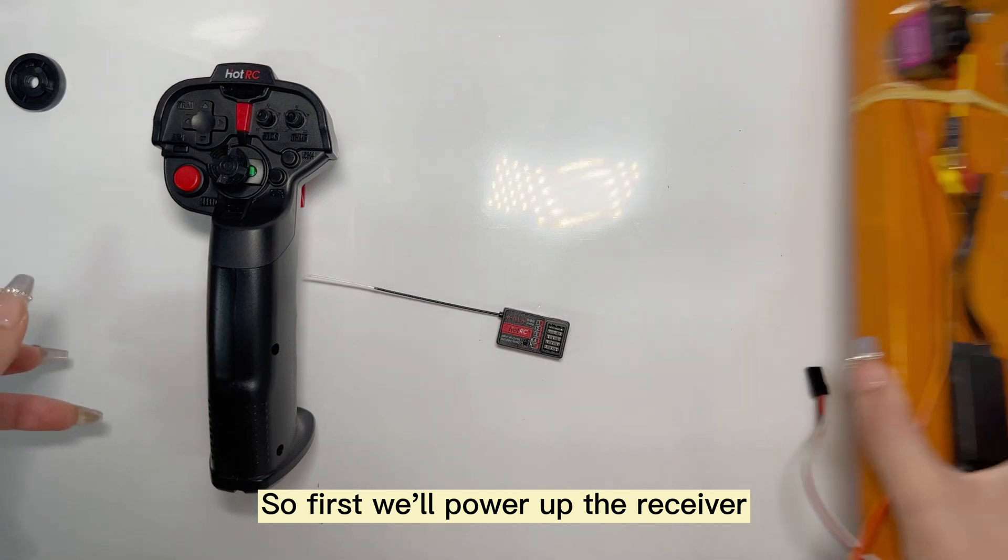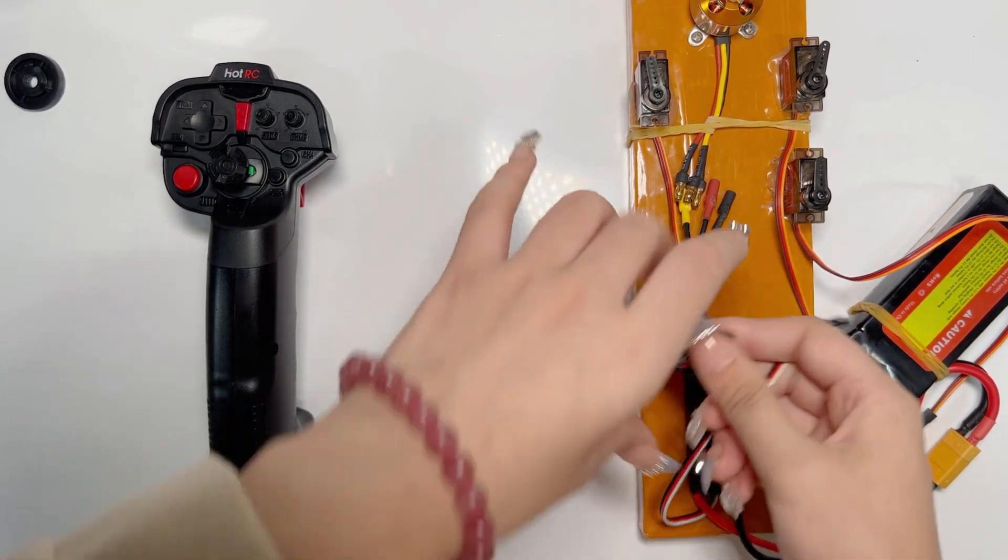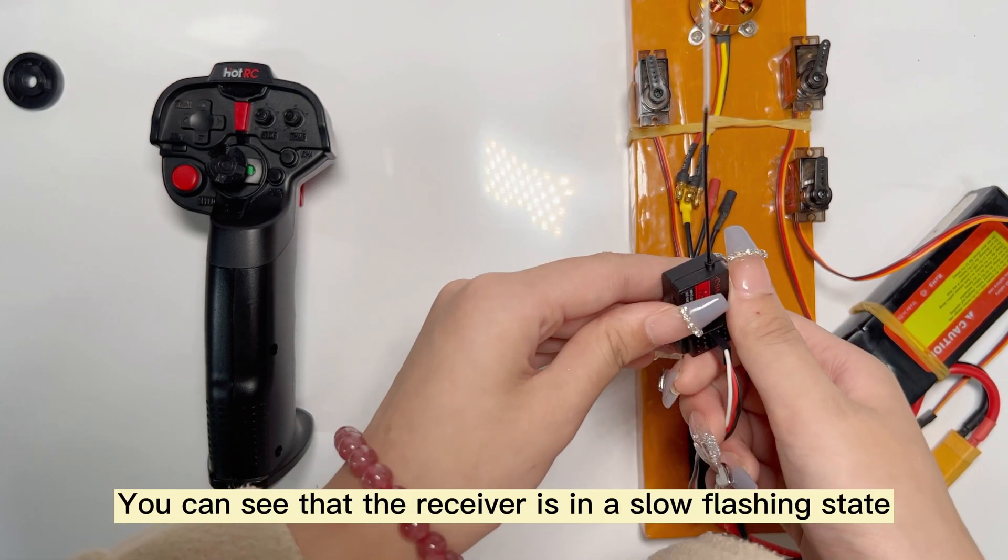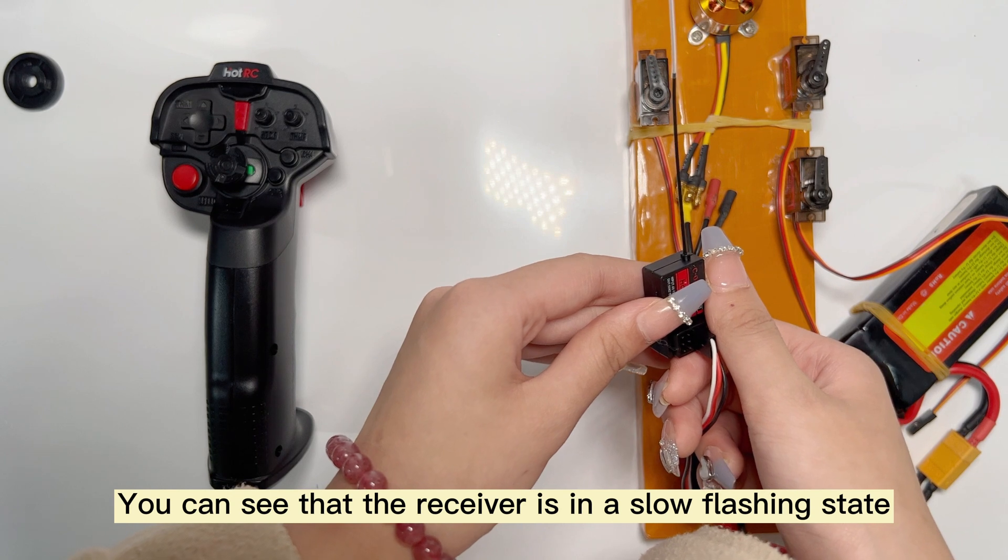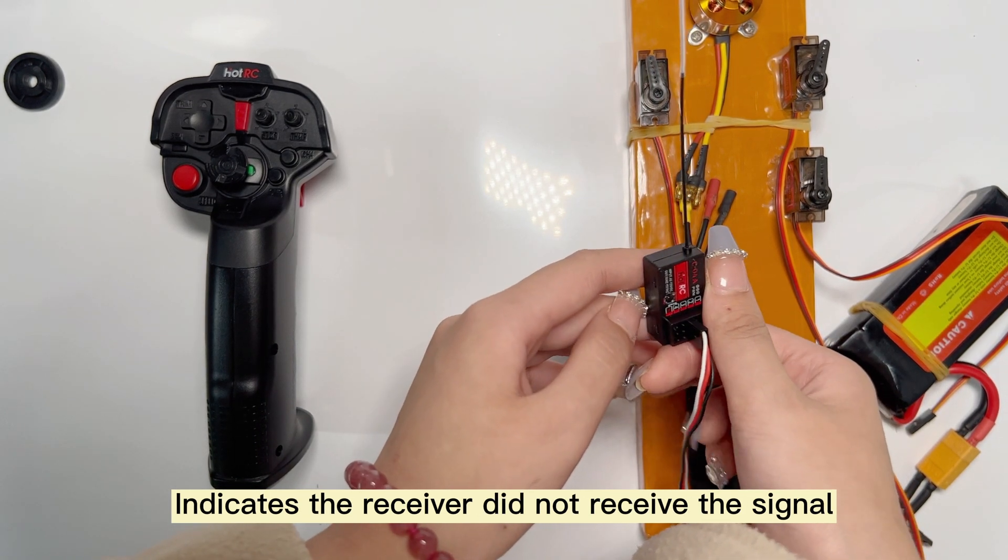So first, we'll power up the receiver. Connect power to the receiver. You can see that the receiver is in a slow flashing state, indicating the receiver did not receive the signal.